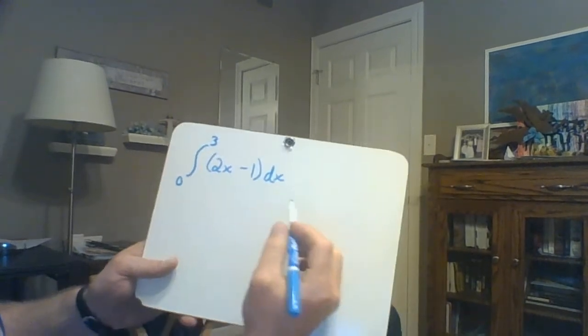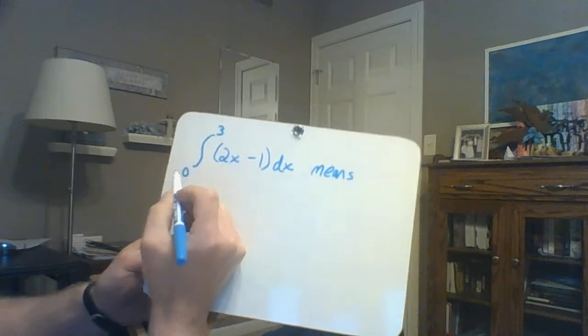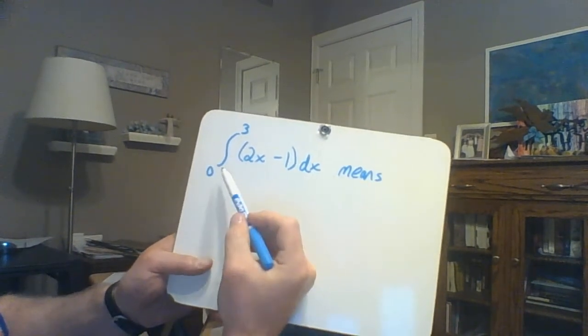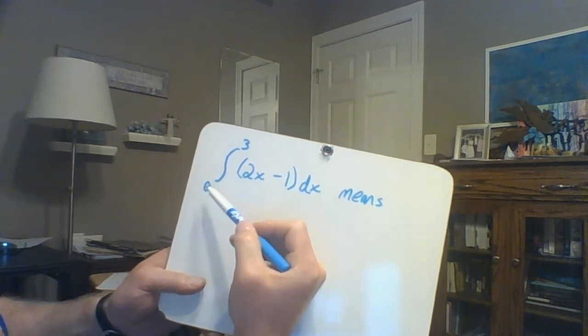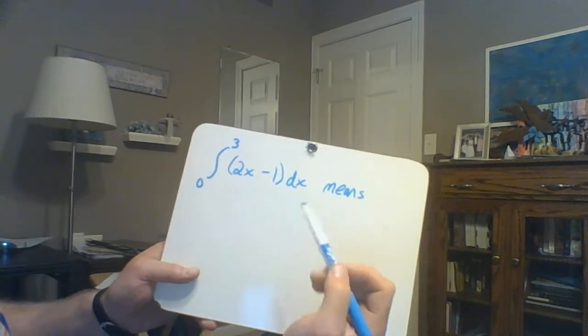But for right now, just know that the definite integral, so right here, and by definite, the difference between a definite and an indefinite integral when you look at it is just here. If they have numbers here, it's a definite integral. If there's nothing there, then it's an indefinite integral.